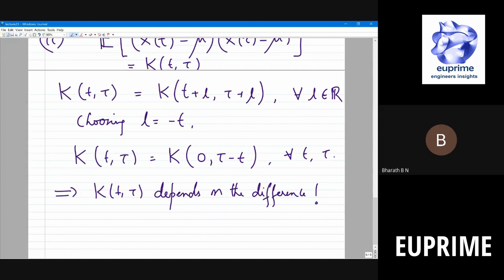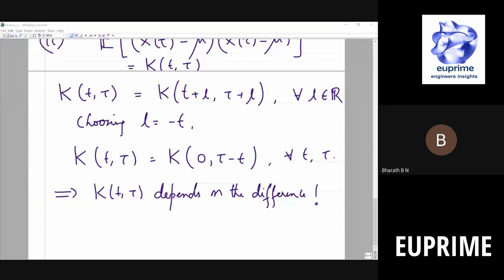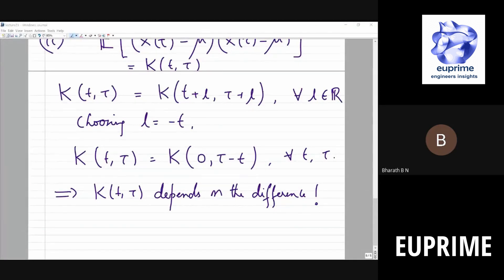If you look at the previous lecture, we looked at a few examples. We looked at Gauss-Markov process. What can you say about this? Do you think this is a stationary process?